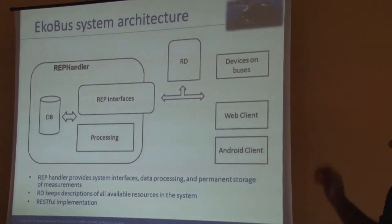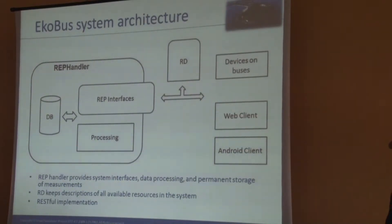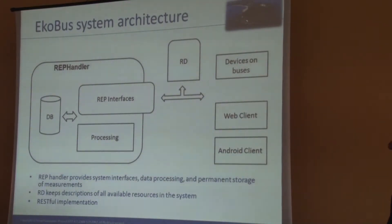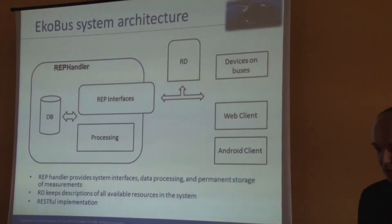There are some databases like RDN for measurements and for processing components. From the client side, there are clients who can use this system. The web client is probably the most useful — it can be accessed through the web browser, and all nodes can be visualized on maps. The system can show arrival time or measurements. There is also an Android client for mobile devices, providing a signal interface for end users.